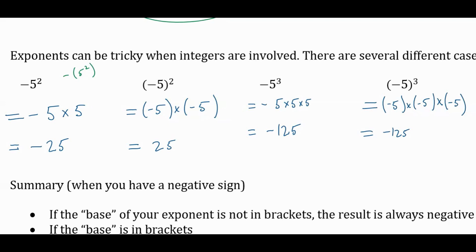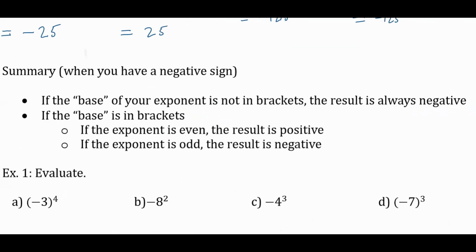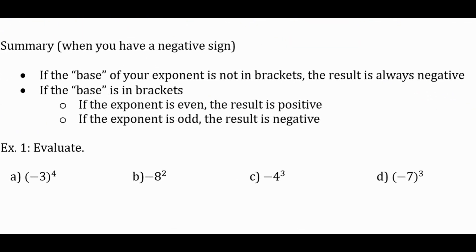So you can write that down. If the base of your exponent is not in brackets, the result is always negative. We saw that in both cases — negative five squared and negative five cubed. We say 'cubed' when we say 'to the three.' Both ended up being negative, whereas negative five all squared or negative five all cubed didn't work out that way.